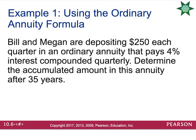Let's look at an example of an ordinary annuity. Bill and Megan are depositing $250 each quarter into an ordinary annuity that pays 4% interest compounded quarterly. Determine the accumulated amount in this annuity after 35 years.